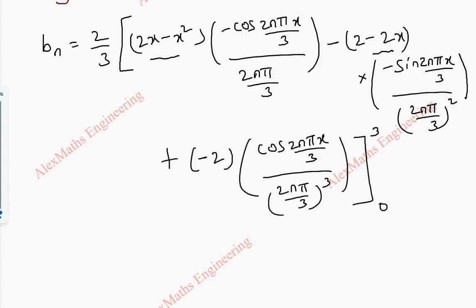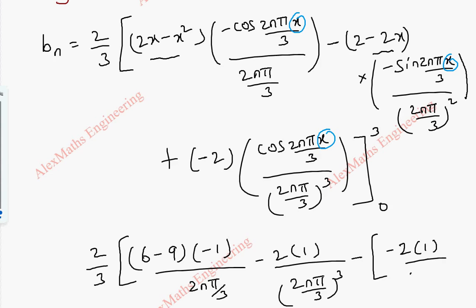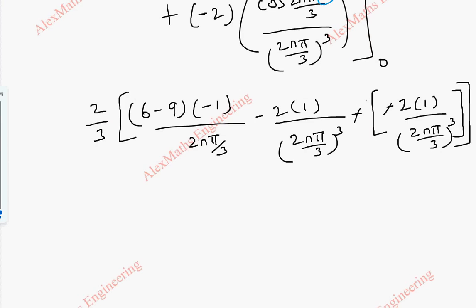When substituting x equals 3: cos becomes cos(2nπ) which is 1, and sine becomes sin(2nπ) which is 0. So we get 2 by 3 open bracket: the first term is (2 times 3 minus 9) times minus 1 divided by (2nπ/3), which simplifies using 6 minus 9 equals minus 3. The second term is 0 because of sine. The third term is minus 2 times 1 divided by (2nπ/3) cubed. Subtracting the lower limit: the first term is 0 because of x, the second term is 0 because of sine, and the third term is minus 2 times 1 divided by (2nπ/3) cubed. Since minus minus becomes plus, the two third-terms, minus 2 by this and plus 2 by this, cancel each other out.